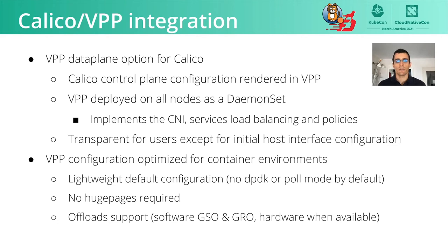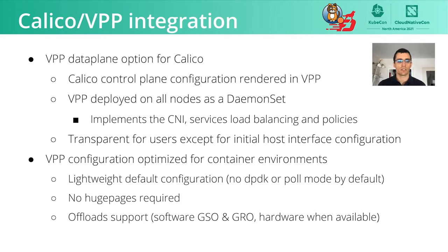For the Calico VPP integration, we use VPP as a data plane for pod traffic in Calico. When you deploy Calico VPP on a Kubernetes cluster, you get one VPP instance on each node that processes container traffic. It will implement the CNI, creating and configuring interfaces within the pods. It will also route this traffic and implement all the specific features required by Kubernetes — including policies, service virtual IP load balancing, source NAT of outgoing traffic, and all other Calico features. It handles encapsulations as well.